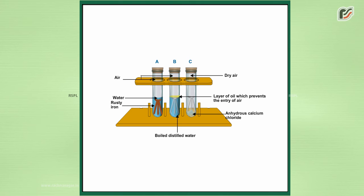Iron nails get rusted in test tube A because both air and water are present. Iron nails do not get rusted in B because there is water but no air. In C, rusting will not take place because there is neither air nor water. Iron gets rusted in the presence of air and water.